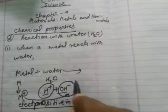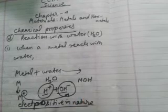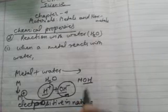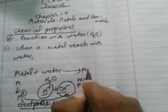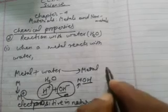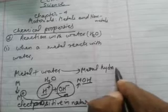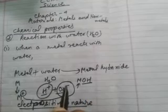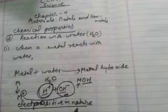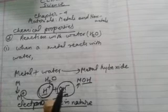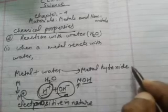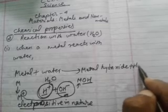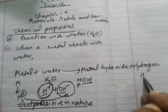So in undergoing a chemical reaction, always a positive ion combines with a negative ion, and it forms MOH — and this ion is called the hydroxide ion. This is a metal hydroxide compound. And the hydrogen ion that is left inside the solution combines with another hydrogen atom and forms hydrogen gas, H₂.